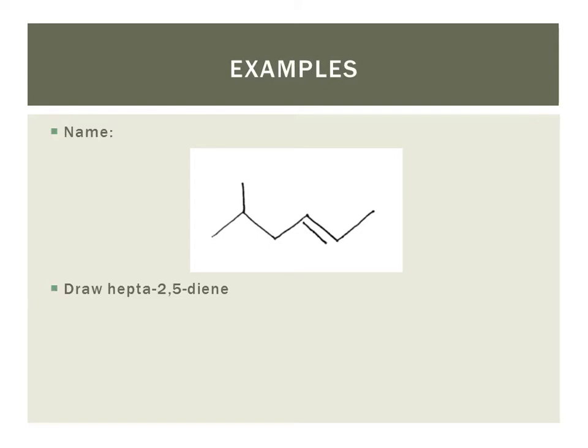Alright, let's try this one. So our first step is to identify the longest continuous carbon chain. So we can see 1, 2, 3, 4, 5, 6. Our longest carbon chain containing the multiple bond is 6 carbons long, which is hex, hex for 6.